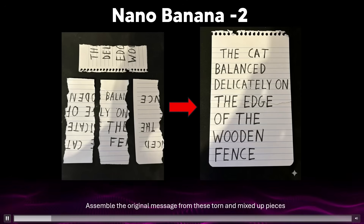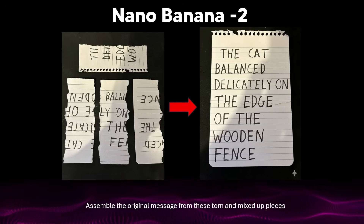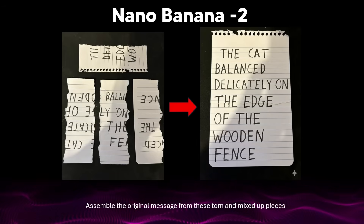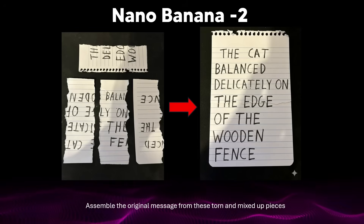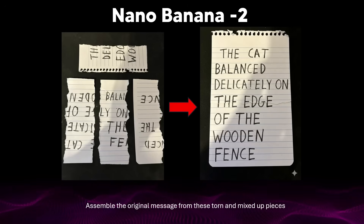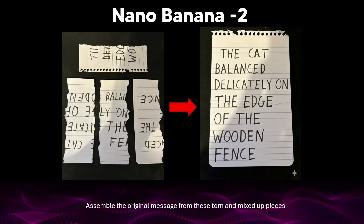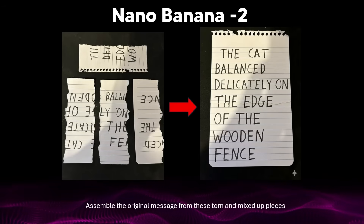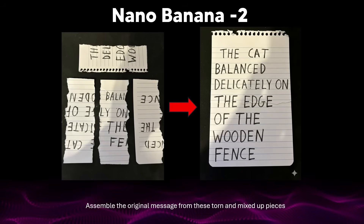The reason this is crazy is because it combines so many different things. It's combining visual pattern matching with semantic understanding — it's not just aligning the torn edges, it's understanding what the sentence is supposed to say. By identifying fragments of letters and word order, it's reconstructing the logical text. It shows comprehension at both visual and linguistic levels, and this is physical reconstruction from incomplete data — the pieces were irregularly torn, partially overlapping and rotated, yet the AI inferred the correct spatial order and orientation to restore the note.